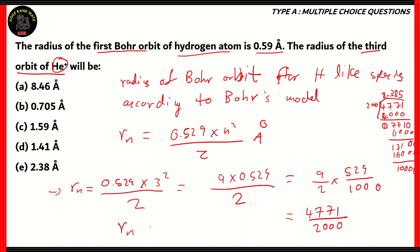The radius of the third orbit of helium plus will be 2.385 angstroms. Therefore, the correct option in this case is option E, 2.38 angstroms. And we found that out by using the formula for the radius of Bohr orbit, which is 0.529 times n squared divided by z in the unit of angstroms.